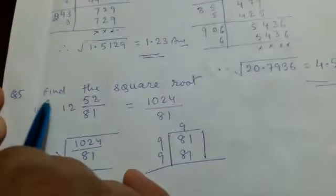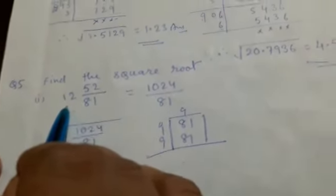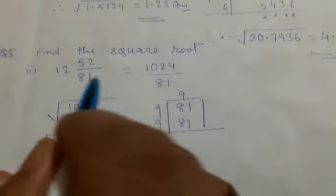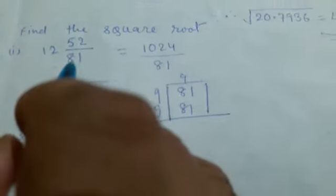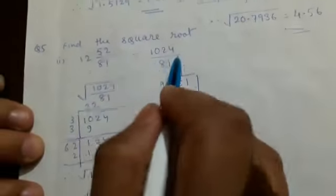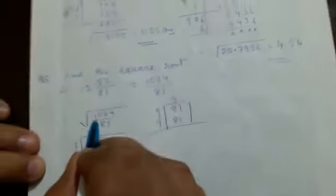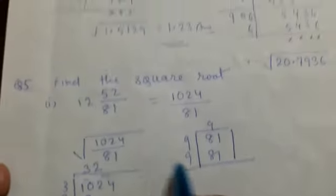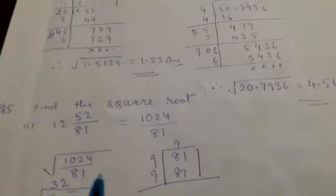Question number five asks us to find the square root of the mixed fraction 12 and 52/81. First, we convert this mixed fraction into an improper fraction. After converting, we get 1024 upon 81. Now we must find the square root of 1024 over 81.